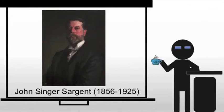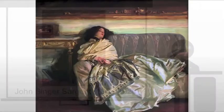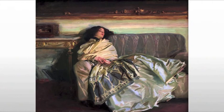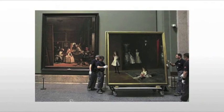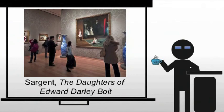John Singer Sargent will develop a looser, more dashing realist style. He will train in Europe, which is going to become increasingly common as we move forward, especially for American artists. He will also be heavily influenced by Velázquez, especially in the painting we're going to look at: The Daughters of Edward Darley Boit.